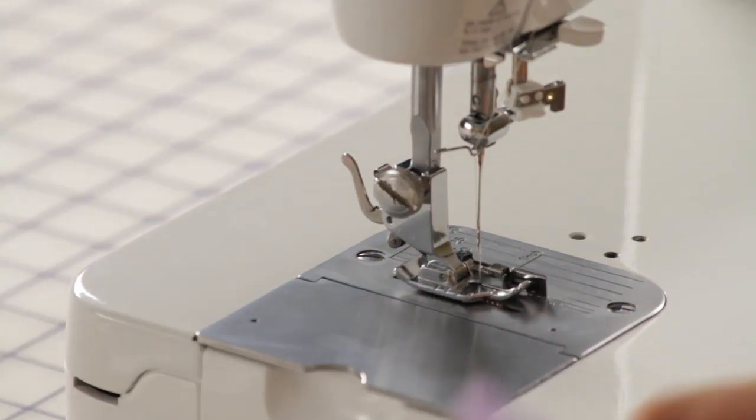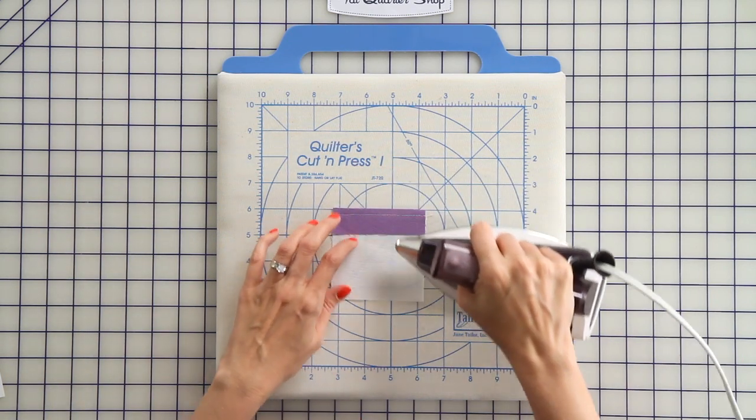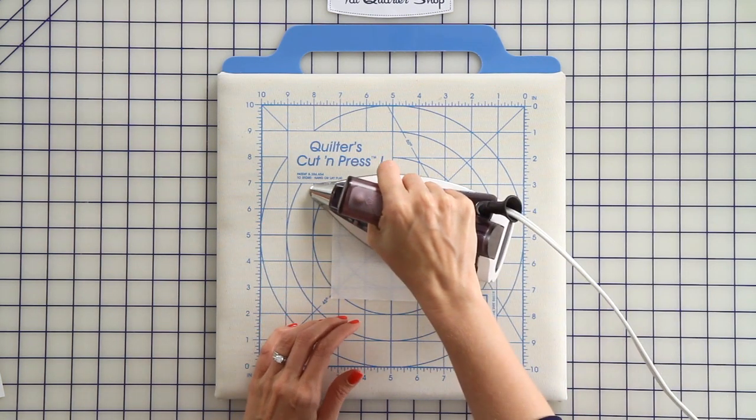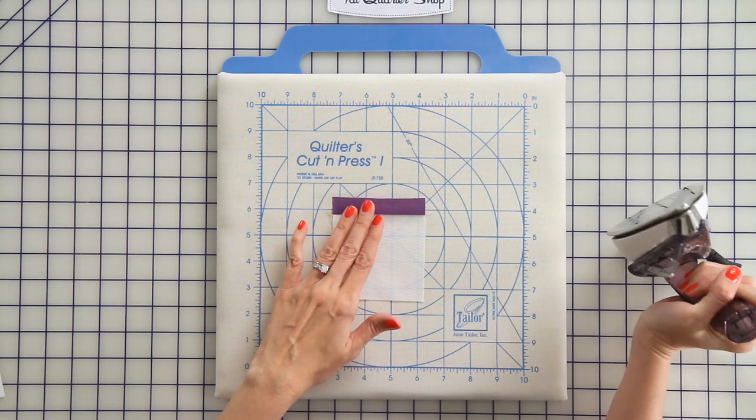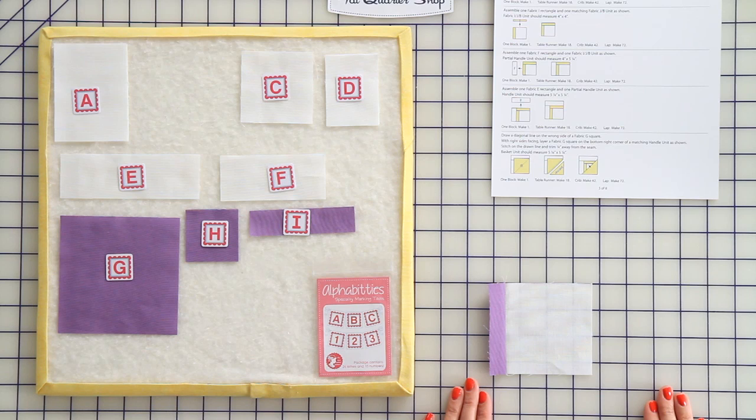So now we're going to press. You just set your seam, and then press toward the darker fabric. In the pattern, you'll just follow your pressing arrows that we have listed for you. Let's keep adding to our block.